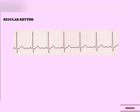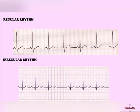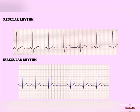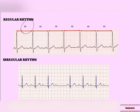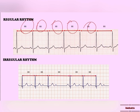Now about regular versus irregular rhythms. In a regular rhythm, the RR interval will be equal, as you can see. But in an irregular rhythm, the RR interval is not equal.